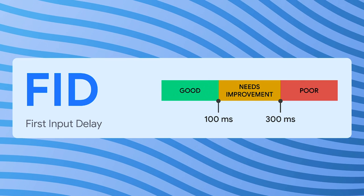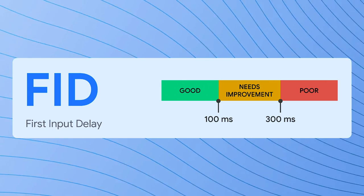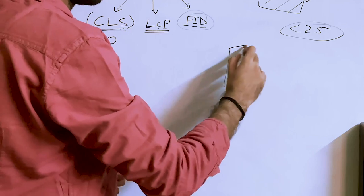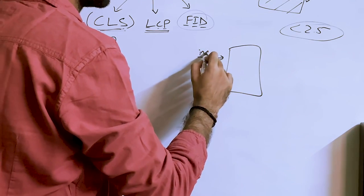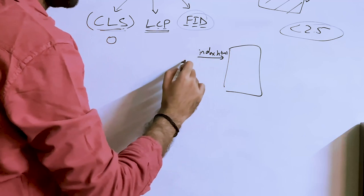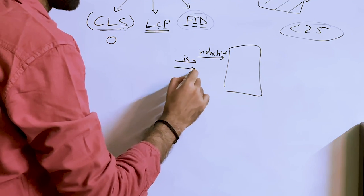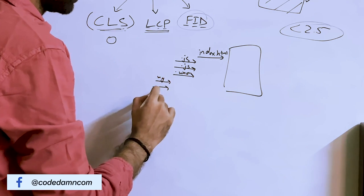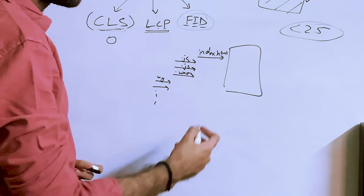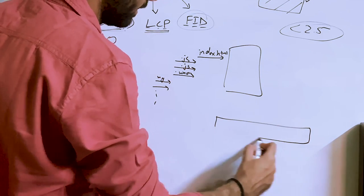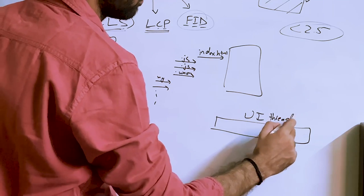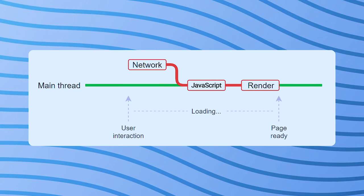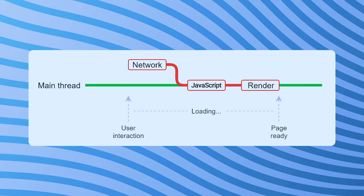Let's talk about First Input Delay, the third Core Web Vital metric, which is one of the most important things to optimize for. When your page is loading, it first receives index.html, which then downloads certain assets — a JavaScript file, a WASM file, images, and so on. With web, you have a single thread known as the UI thread responsible for rendering the page and running JavaScript.